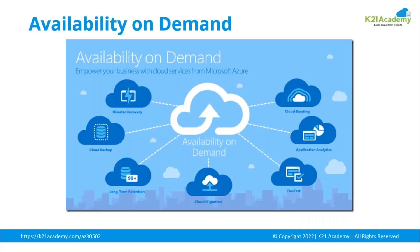Availability on demand means that when designing a solution, if tomorrow there is a regional level outage — for example, web applications and databases deployed in East US go down — you need another site to respond in that situation. So how do we create site-to-site connectivity, bringing up services at another location in no time to minimize the damage caused by resources being unavailable?